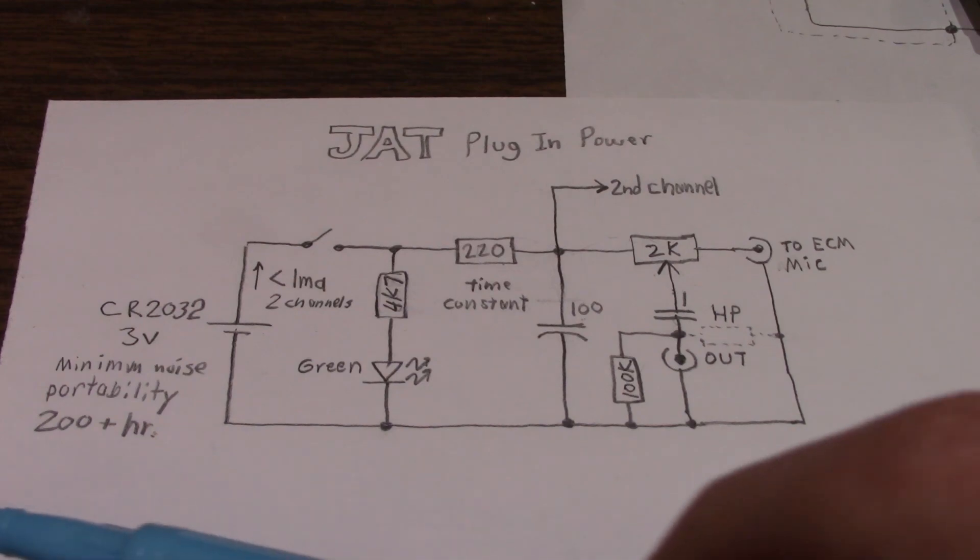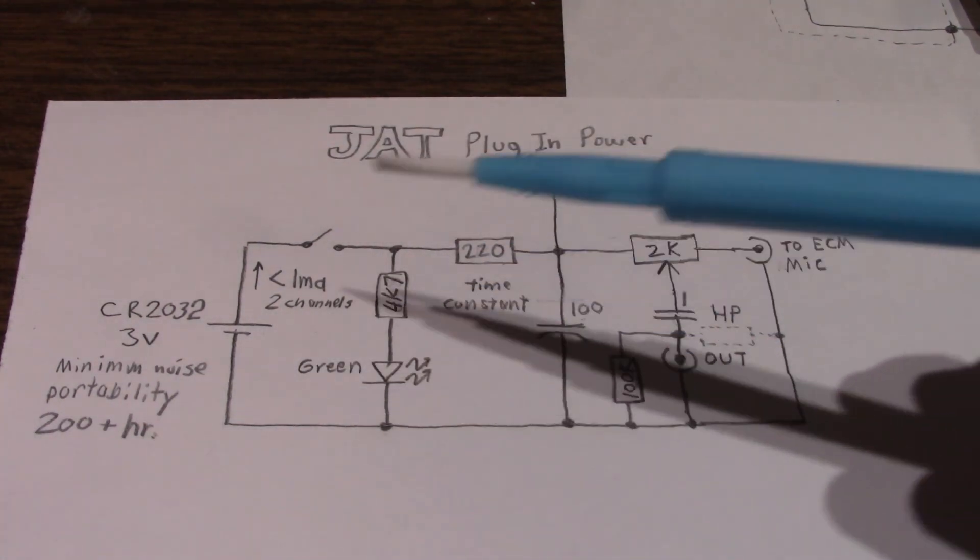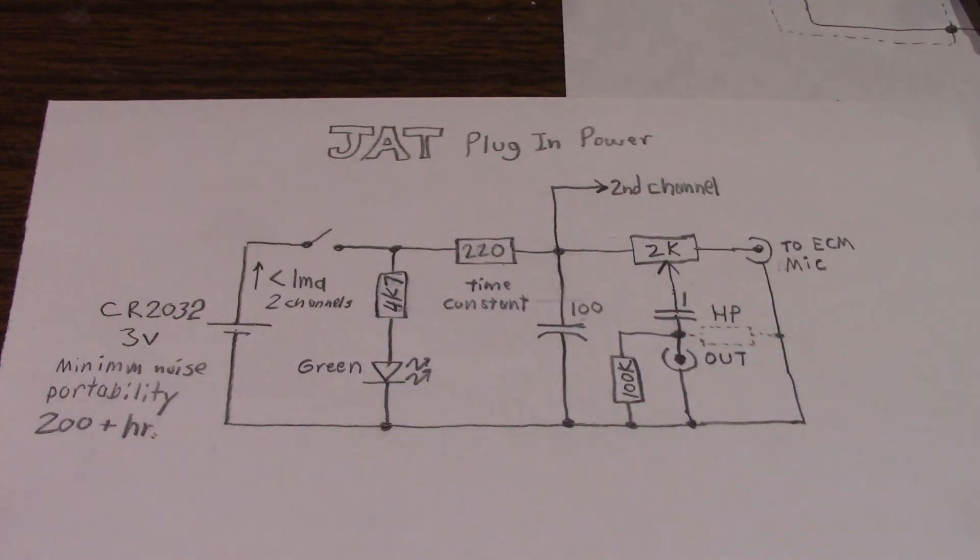And I should get 200 hours of recording time using that size of battery. Because the entire circuit, two ECMs plus the indicator LED, draw less than 900 microamps. So I have the indicator light on there because if I don't, I'll end up leaving the thing turned on and run the battery down anyway.